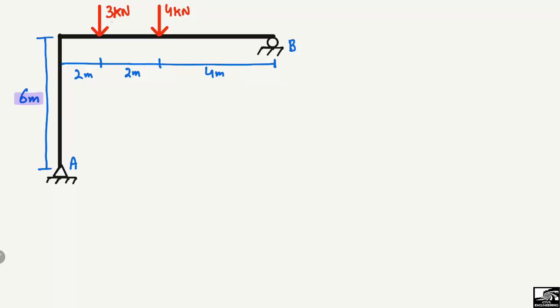The first is a 3 kilonewton concentrated load acting at a distance of 2 meters from one end, and a 4 kilonewton load acting at a distance of 4 meters from the right end or right support of the beam. To analyze this frame structure, let's consider the roller support, which can only take vertical load.